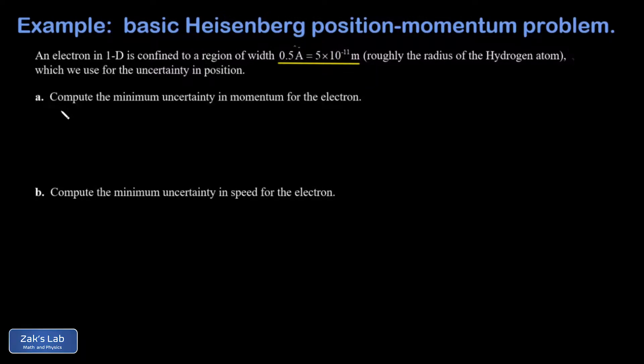The position-momentum version of the Heisenberg uncertainty principle states that the product of the uncertainty in position and uncertainty in momentum is at least as big as Planck's constant over 4π, where Planck's constant is about 6.626×10⁻³⁴ joule seconds.